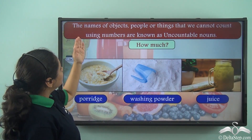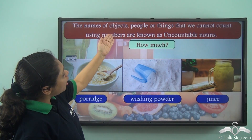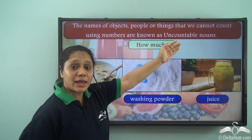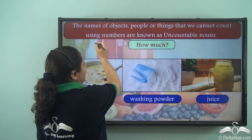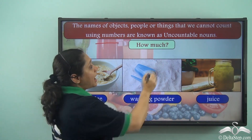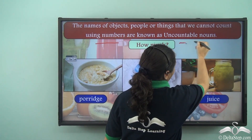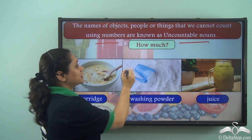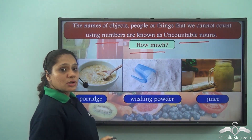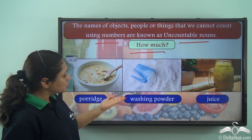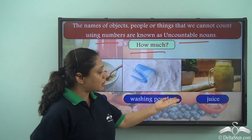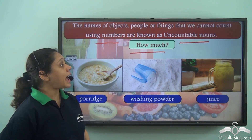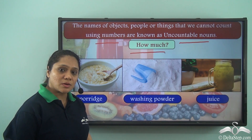Whereas the names of objects, people or things that we cannot count using numbers are known as uncountable nouns, and they always answer the question 'how much.' So nouns like porridge, washing powder, and juice cannot be counted and are uncountable nouns.